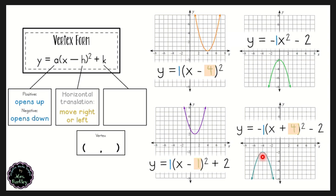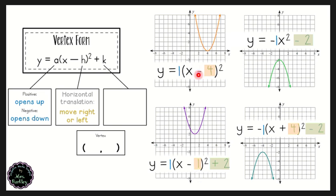Looking at the k value in vertex form: in the first equation there's no k value, but in the second we have k equal to positive two. Another equation has a k value of negative two, and another also has a k value of negative two. We said our h value is the x value of our vertex, and now we can see that our k value is the y value of our vertex. So this vertex is at the point (1, 2), which we can see highlighted. In this situation we have an x value of four for the vertex, and with no k value the y value of the vertex would be zero.